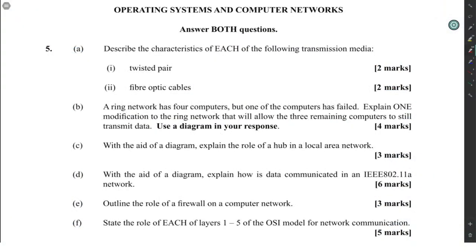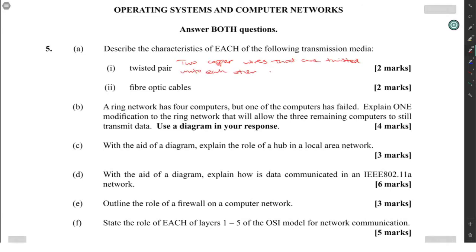Describe the characteristics of each of the following transmission media. Twisted pair: twisted pair is two coupled wires that are twisted onto each other and transmits electrical signals.